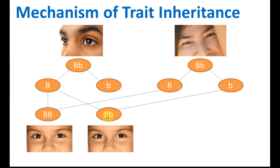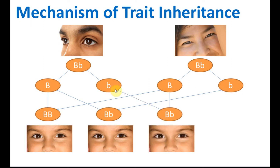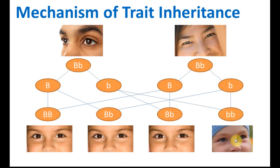Because brown eye is still dominant. If this one combined with this one, we still get hybrid brown eyes. And if this combined with this, then we get blue eyes — even though both the father and mother have brown eyes, one out of four of the children may have blue eyes. So this is how inheritance works.